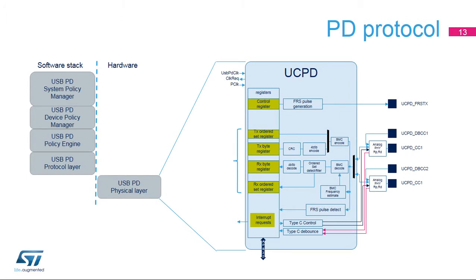The PD software stack is executed by the Cortex-M4 core in the STM32G4. It is based on messages and events; events are reported to the Cortex-M4 core through interrupts. Regarding messages, only the payload is under software control. The digital controller performs message encapsulation with preamble, start of packet, CRC, and end of packet. The software stack includes the protocol layer, the policy engine, the device policy manager, and the system policy manager. The system policy manager may control several PD ports to implement platform-level power management.